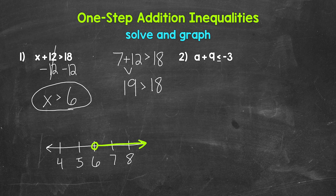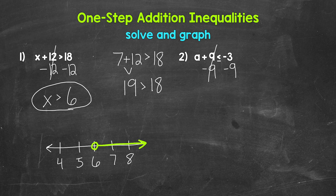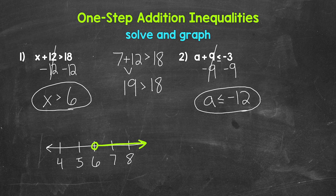Let's move on to number 2, where we have a plus 9 is less than or equal to negative 3. So we need to undo that addition — the inverse operation is subtraction. Subtract 9 from the left side, which means we need to subtract 9 from the right side as well. On the left side, these 9s cancel each other out, so we have a isolated. On the right side, negative 3 minus 9 gives us negative 12.